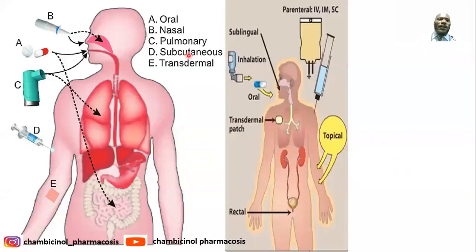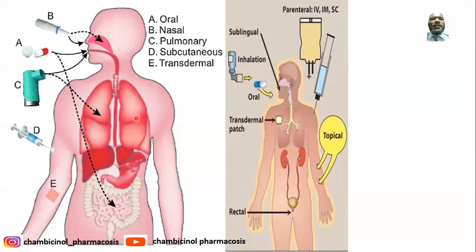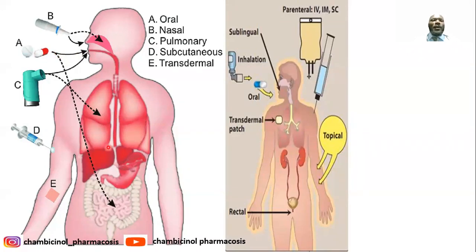The intranasal route means the drug is taken through inhalation via the nasal cavity, reaching the lungs for absorption. The effect is very quick because absorption takes place at the vast surface of the alveoli. The oral route, including tablets, capsules, and solutions, must pass through the mucous membrane of the GIT, where first-pass metabolism is possible.